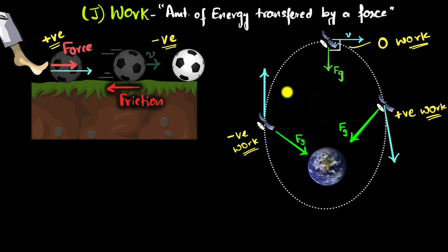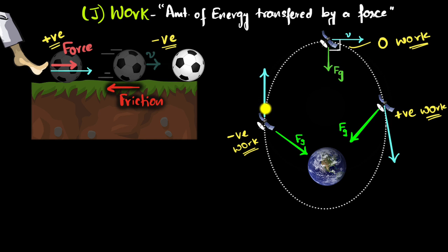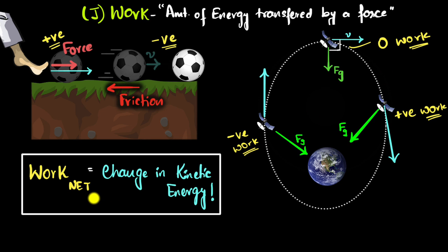So far we considered one single force acting on an object. What if there are multiple forces? Then we calculate the work done by the net force. If the net work done is positive, kinetic energy increases. If it's negative, kinetic energy decreases. If it's zero, kinetic energy stays the same. This is called the work-energy theorem: the net work done on an object equals the change in its kinetic energy.